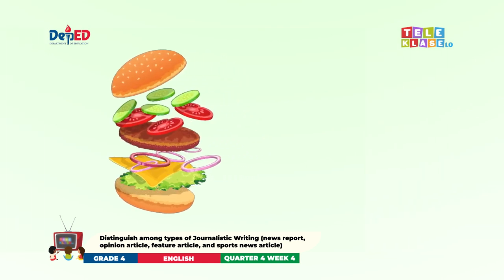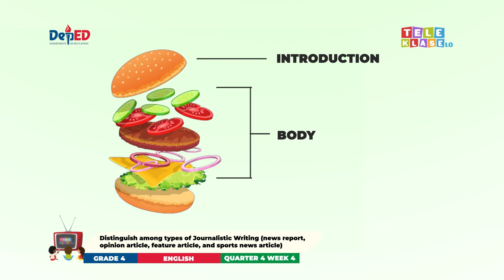As shown, you can find the introduction on the top, represented by the top half of a bun. This is followed by the fillings, represented by the burger patty, vegetables, cheese, and other sauces to make it delicious. This means that the beauty of features and opinions depends much on the body. At the bottom, you can find the conclusion or the other half of the bun. Without this other half, you cannot hold the sandwich as a whole — meaning the conclusion serves as the closure to the articles.